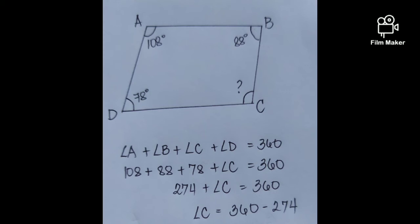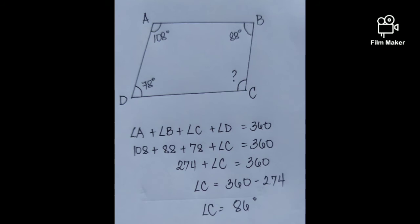360 minus 274 is equal to 86. So our final answer for angle C is 86 degrees.